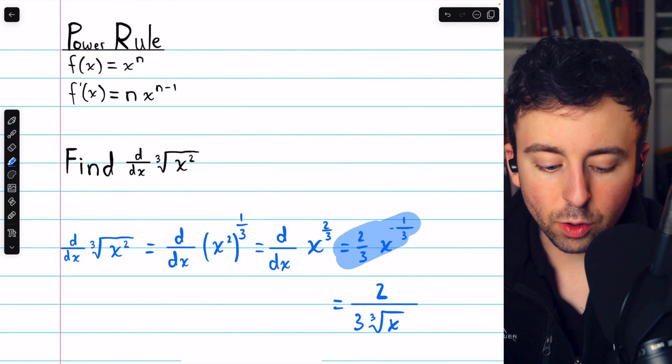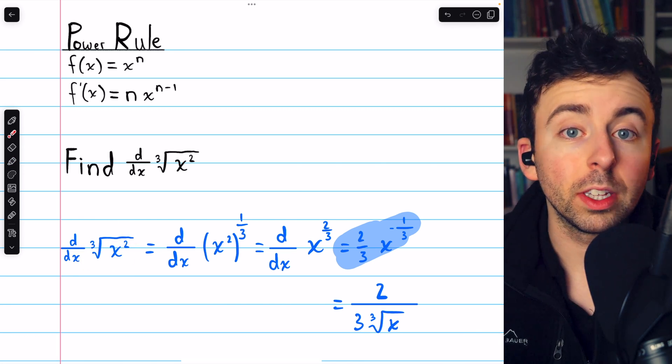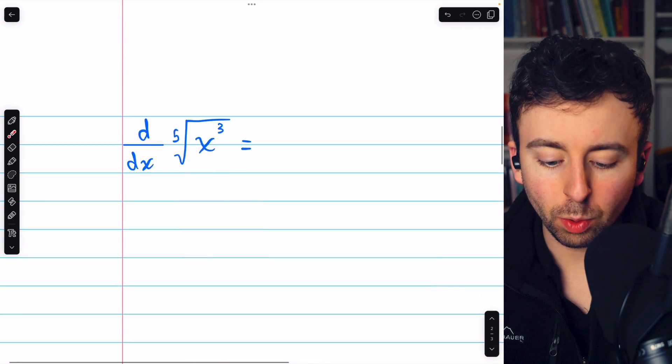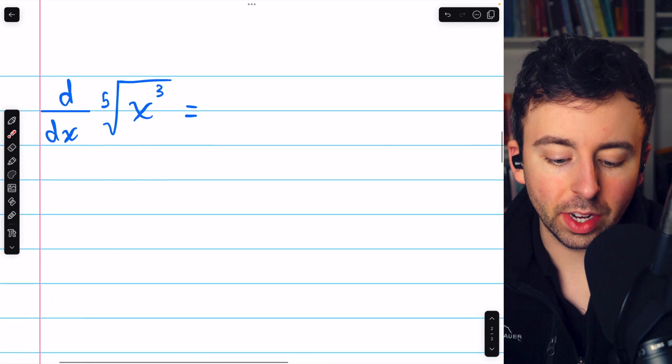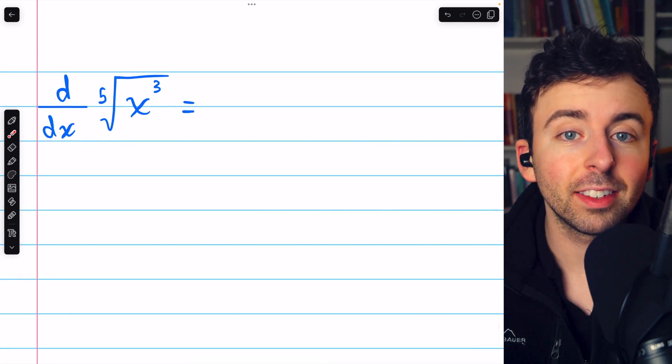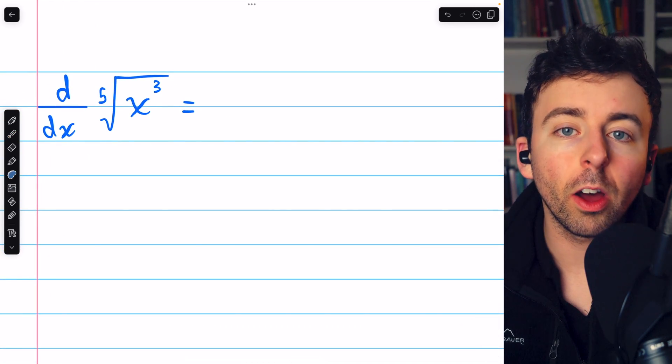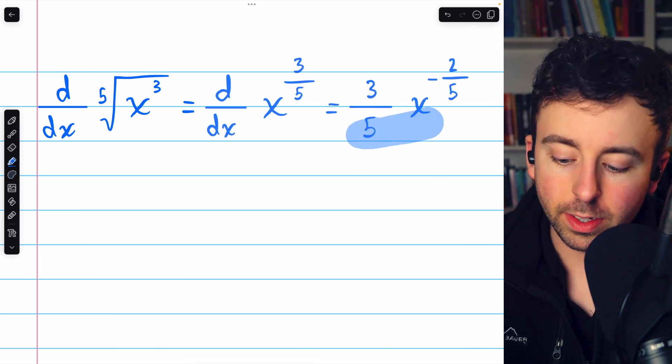So that's how to find the derivative of the cube root of x squared using the power rule. Go ahead and try this one yourself for practice. The derivative of the fifth root of x cubed. I'll put the solution on screen now. There is the answer.